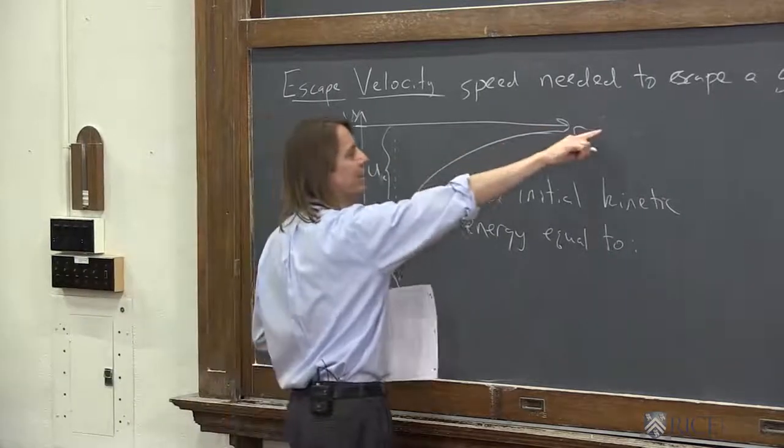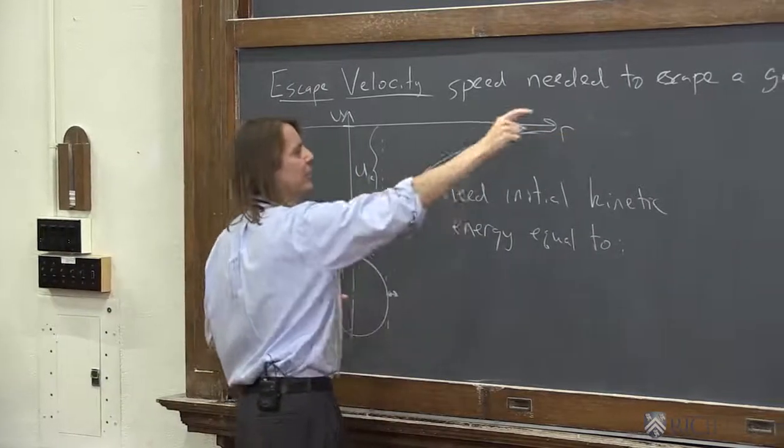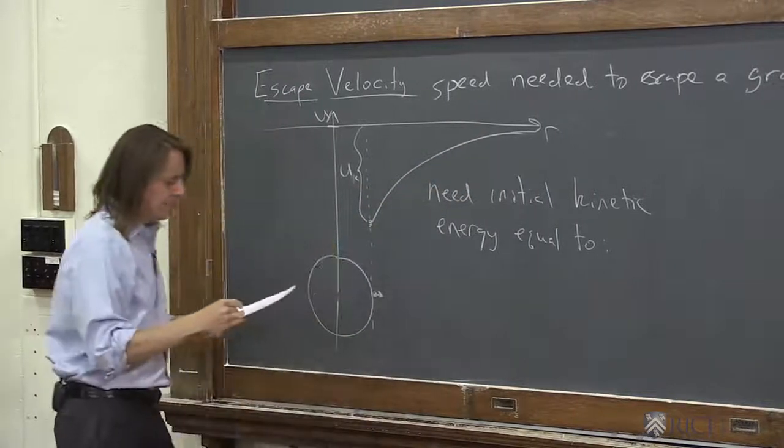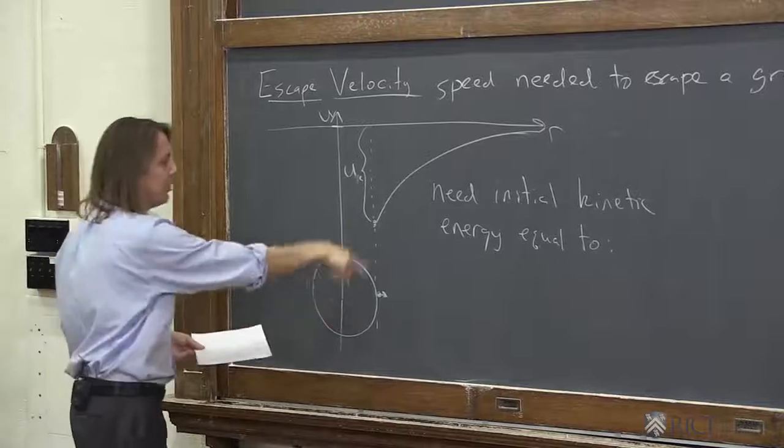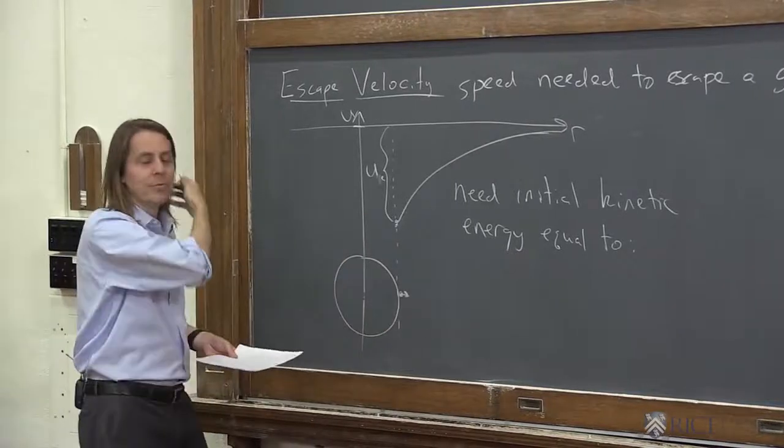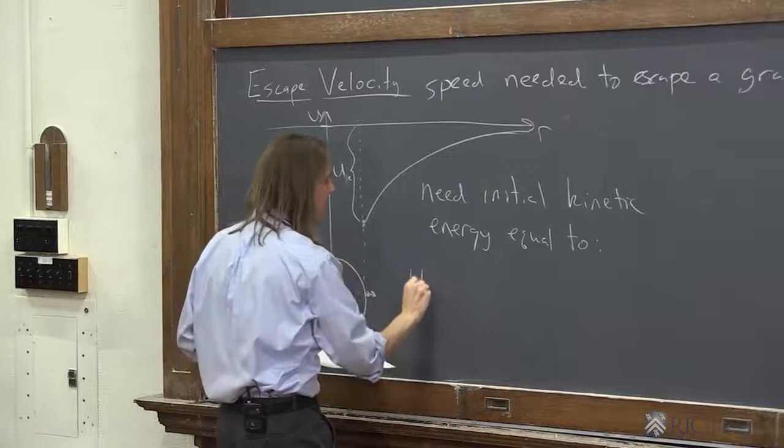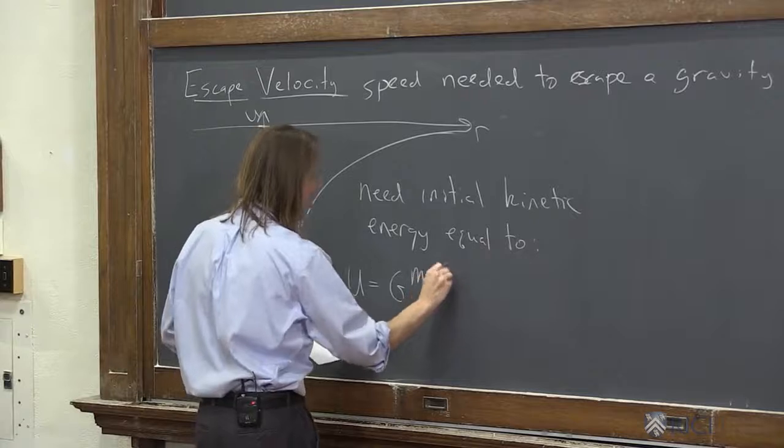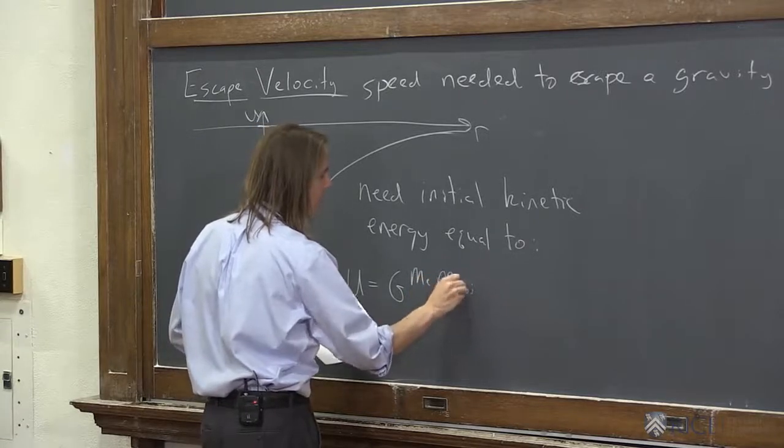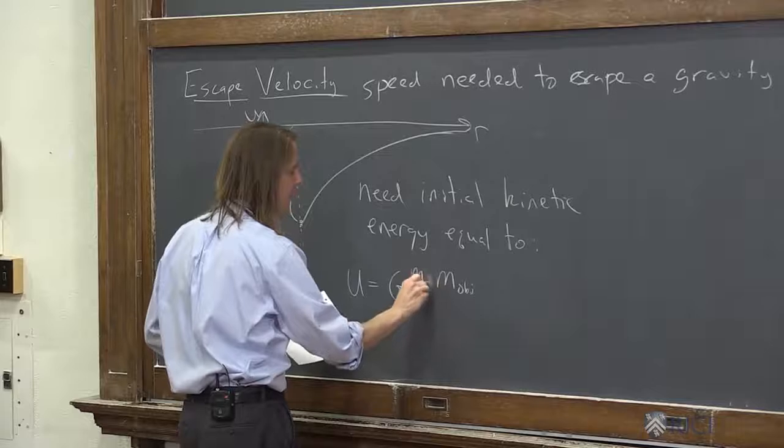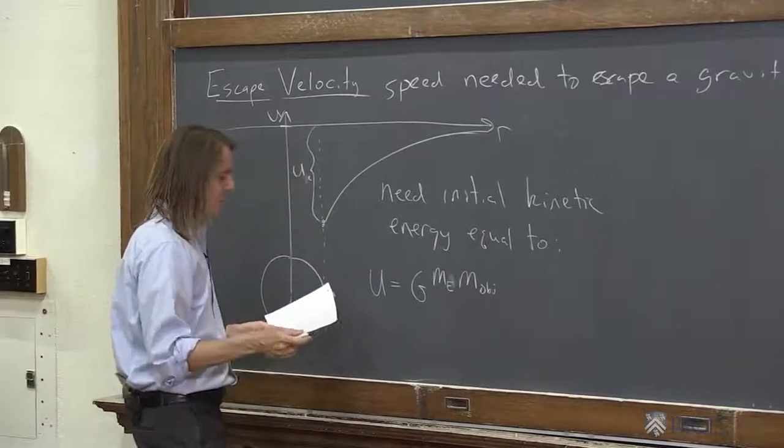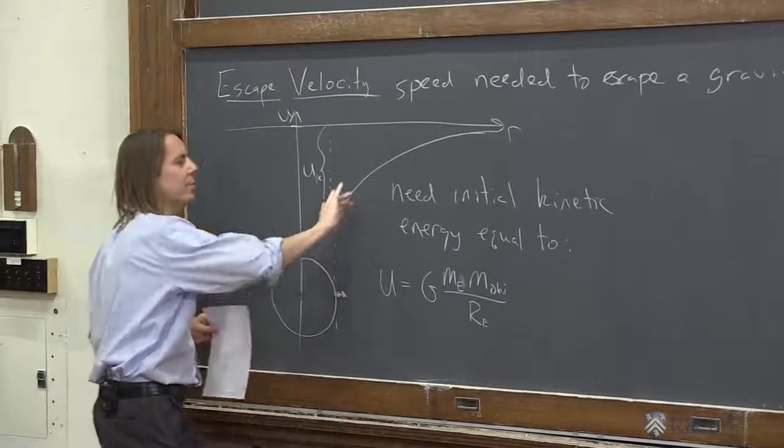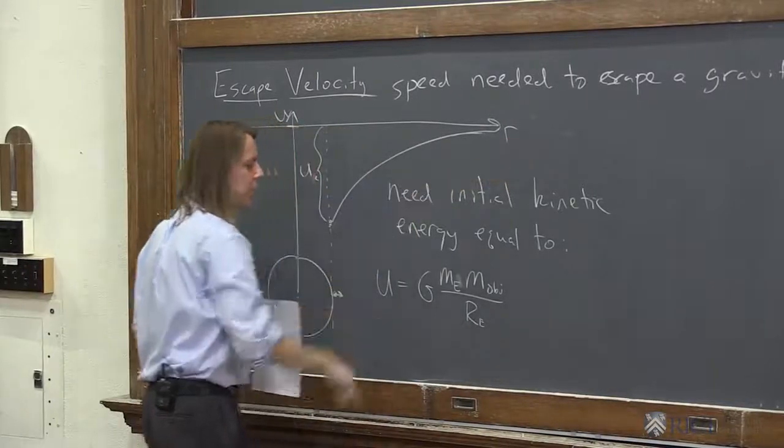And U escape, then, is just the final, it's just the difference between these two points. This one minus this one, well, this one is zero minus a negative this one. It's really just plugging R of the Earth into the potential energy formula, right? So the U that you need is big G, mass of the Earth, mass of the object. So there's an E for, I'll use a big E for Earth. Mass of the Earth, mass of the object over the radius of the Earth. Because we're going from the radius of the Earth, and we're trying to get all the way to infinity, where U is zero.